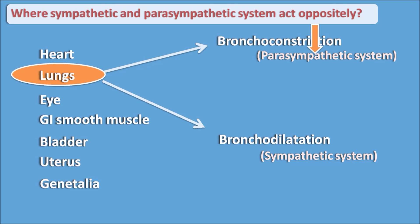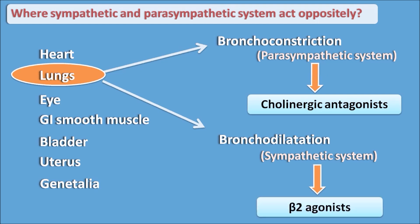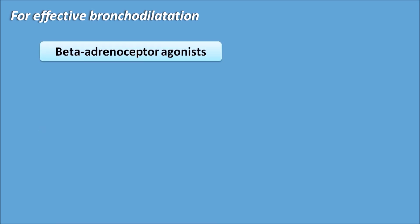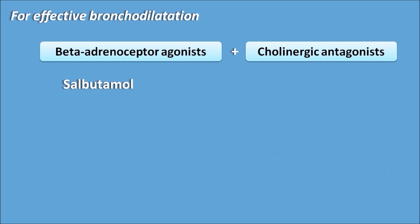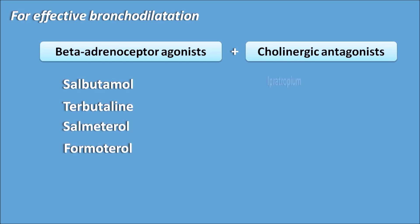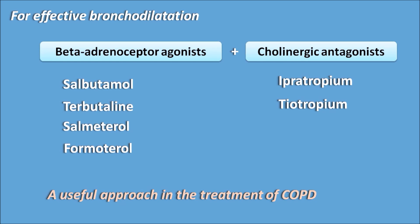To produce bronchodilation, we use a cholinergic antagonist to block parasympathetic bronchoconstriction, and a beta-2 agonist to activate sympathetic bronchodilation — both producing the same effect. For effective treatment, they are combined. Beta-2 agonists include salbutamol, terbutaline, and formoterol; cholinergic antagonists include ipratropium and tiotropium. This combination is particularly useful in treating COPD, where irreversible bronchoconstriction is present in patients.